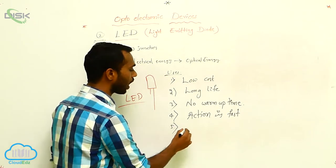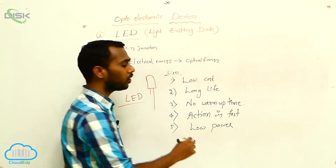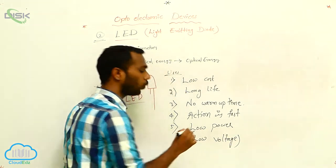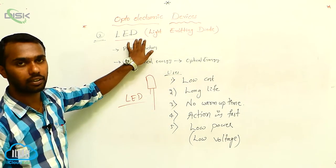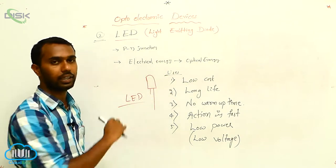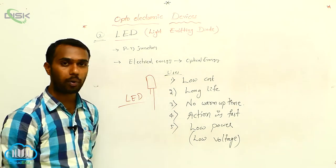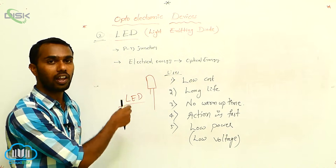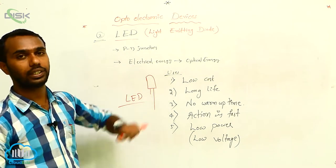Next, it uses low power — at low voltage, we can operate it. It uses less voltage to glow. So these are the advantages of LED: low cost, long lifetime, no warm-up time, action is very fast within a fraction of seconds, and low power — it uses less voltage to glow.